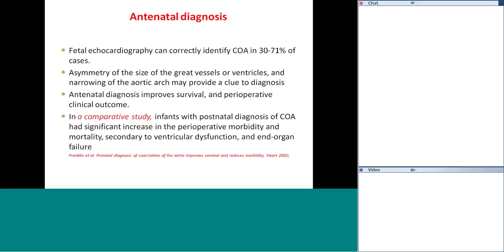Regarding diagnosis, fetal echocardiography can correctly identify coarctation in about 30 to 70% of cases. Coarctation is often a difficult diagnosis on fetal echo. What to look for is asymmetry in the size of the great vessels or ventricles and narrowing of the aortic arch. These findings provide a clue to the diagnosis, though the presence of the ductus arteriosus can cause confusion.